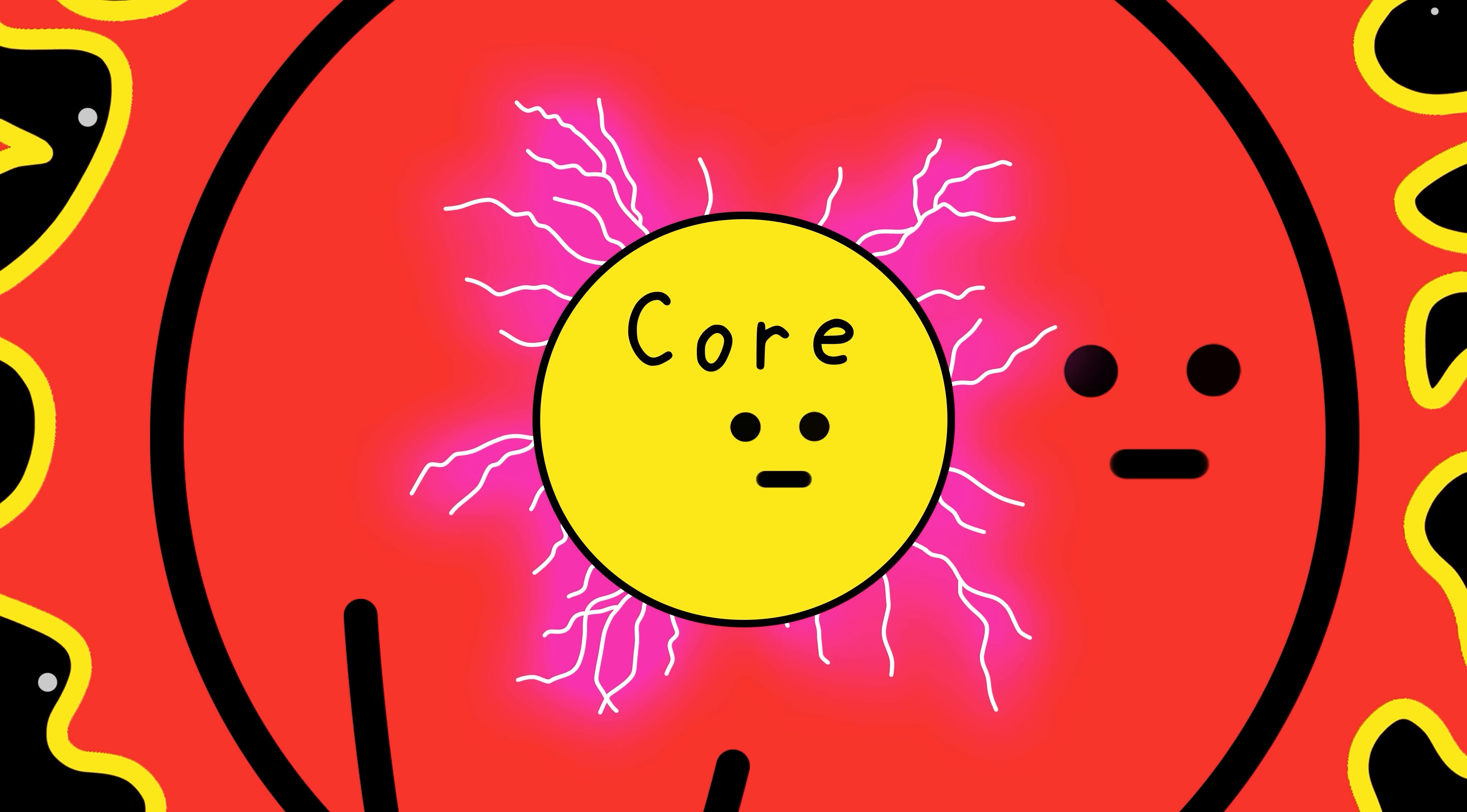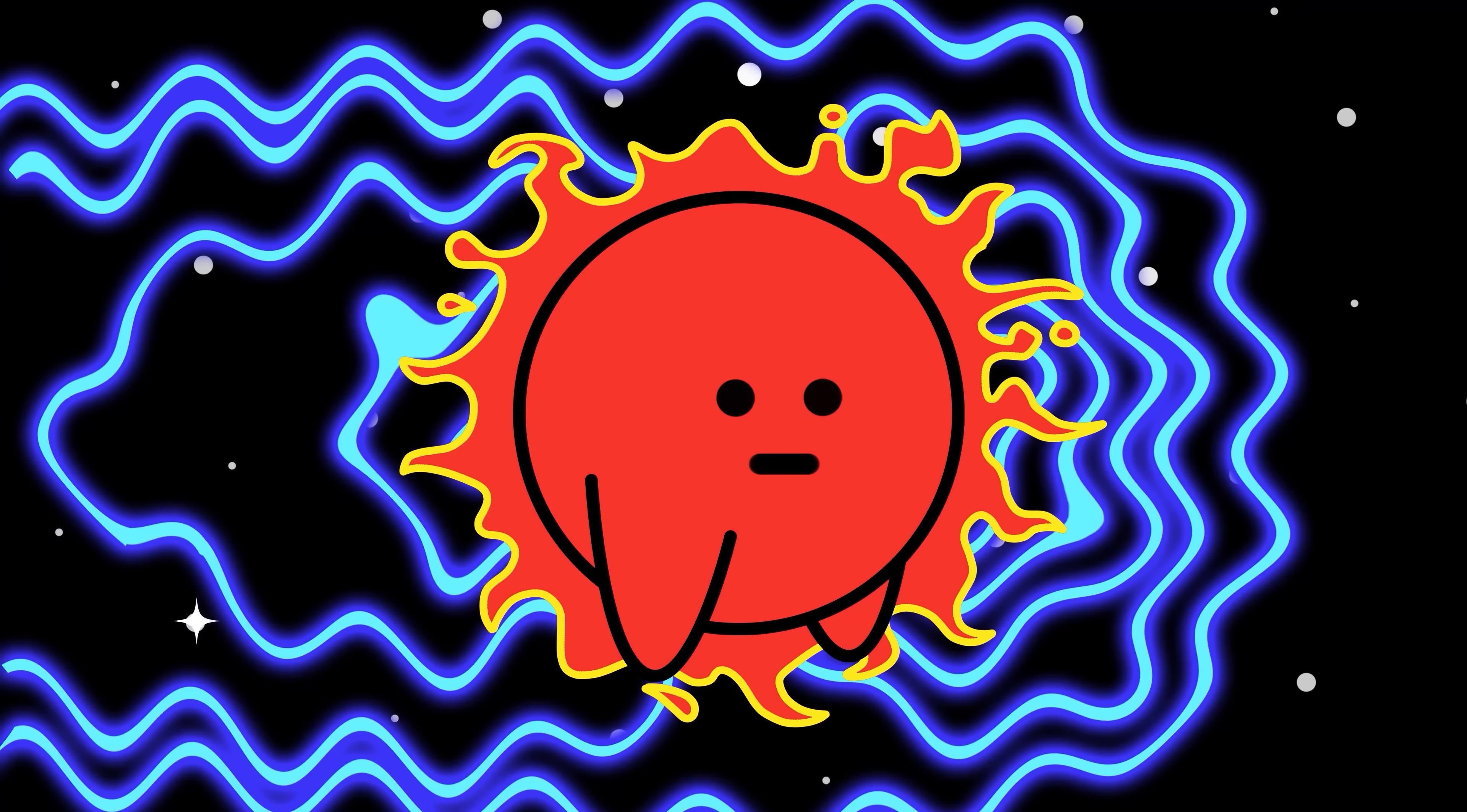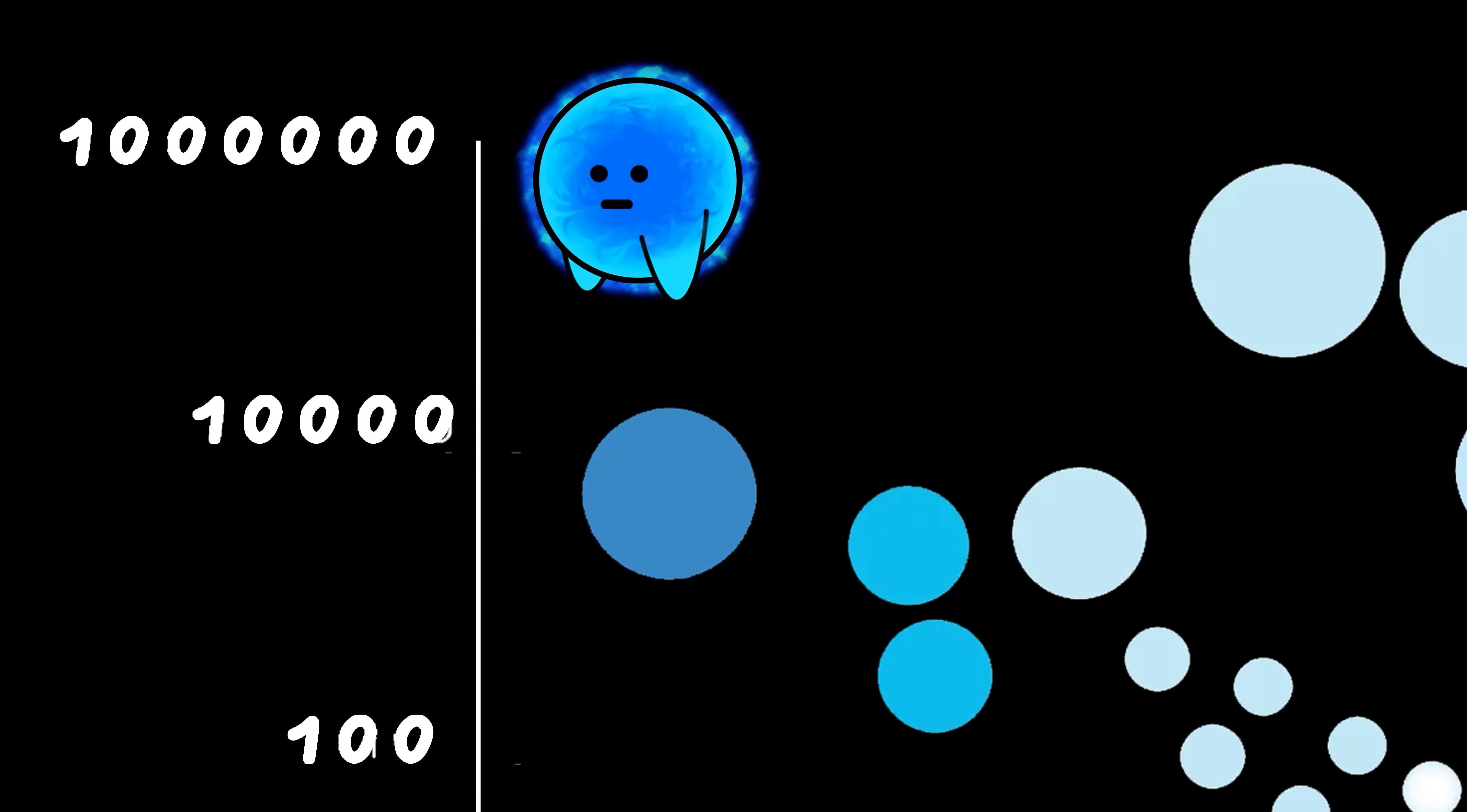Basically, hot plasma churns straight from the core to the surface, tangling magnetic fields that snap and release monster stellar flares. But what about the extreme stars on the other side of the diagram? The massive blue stars.